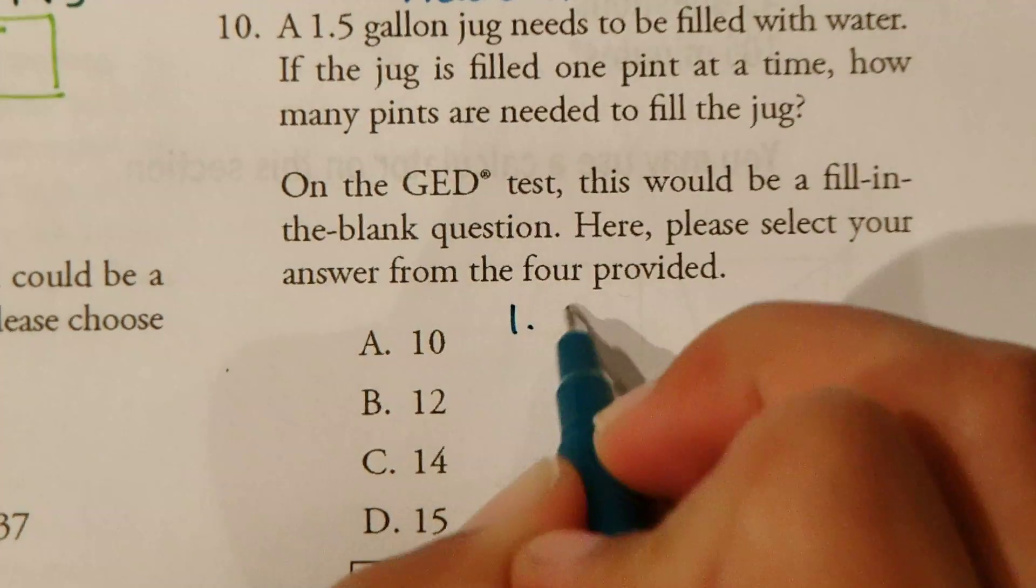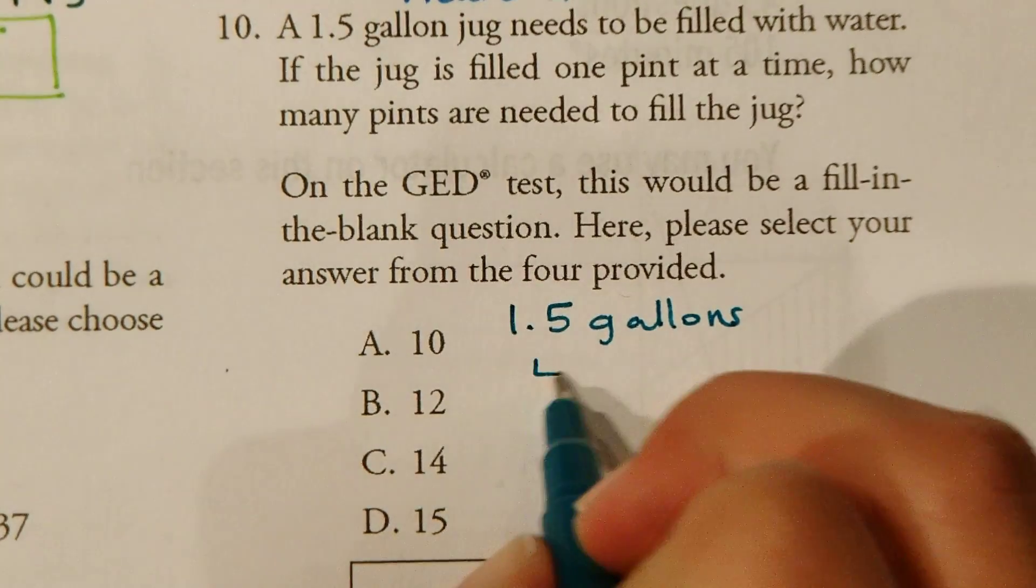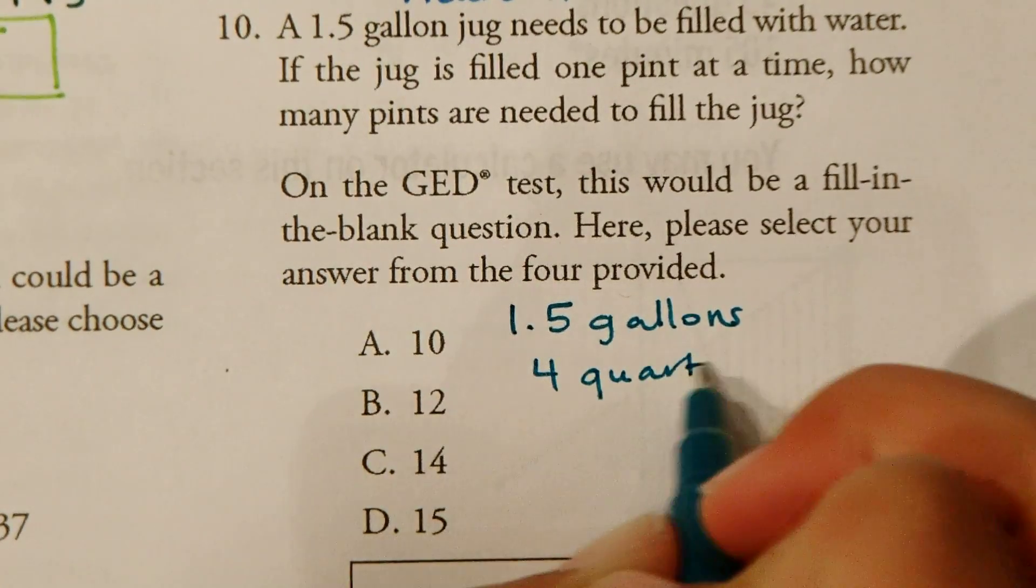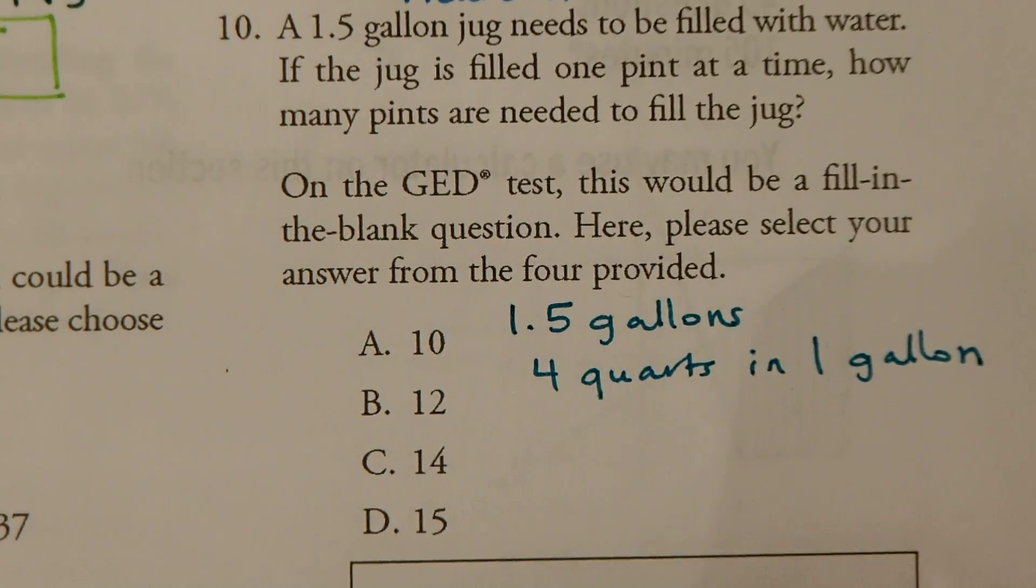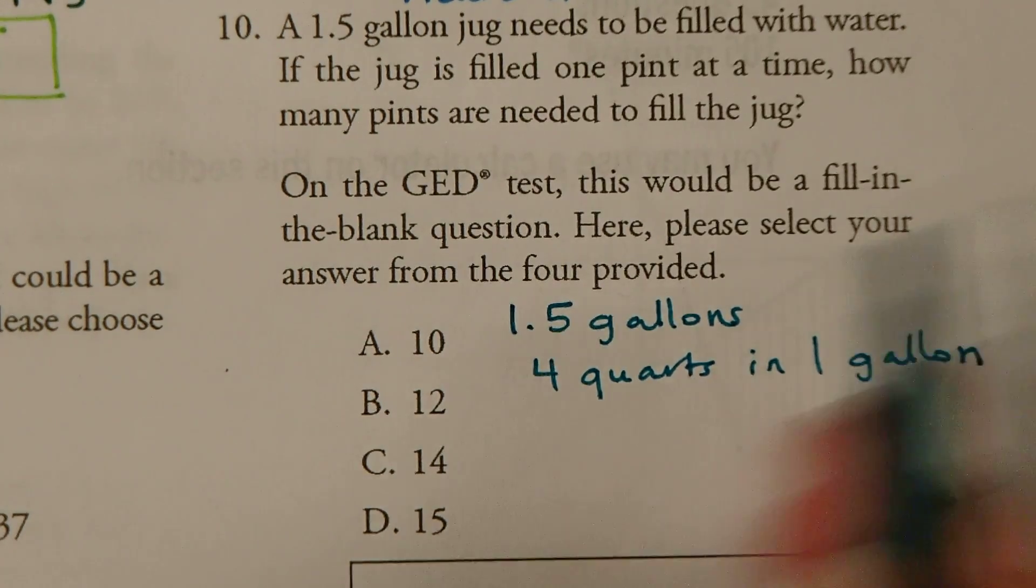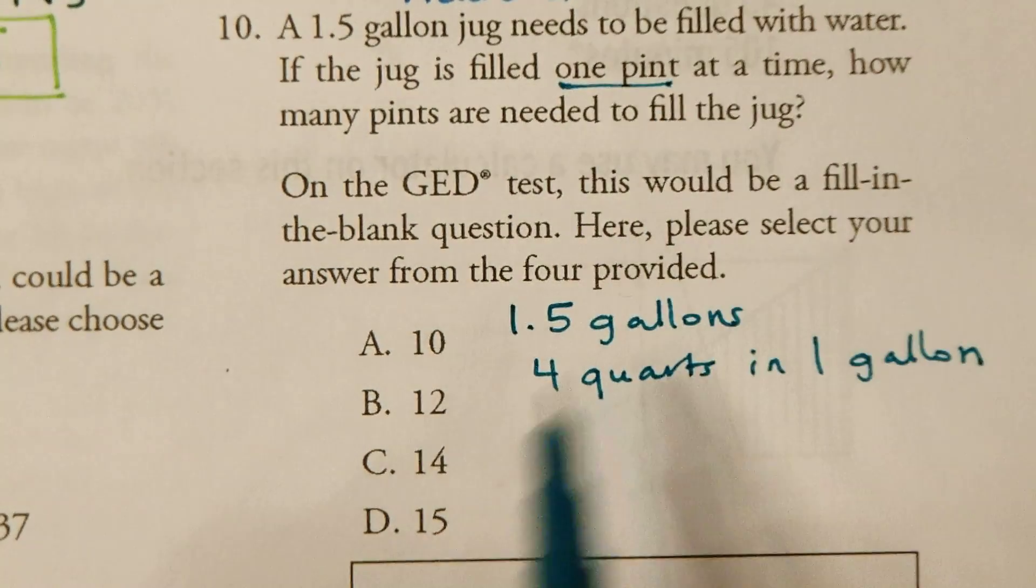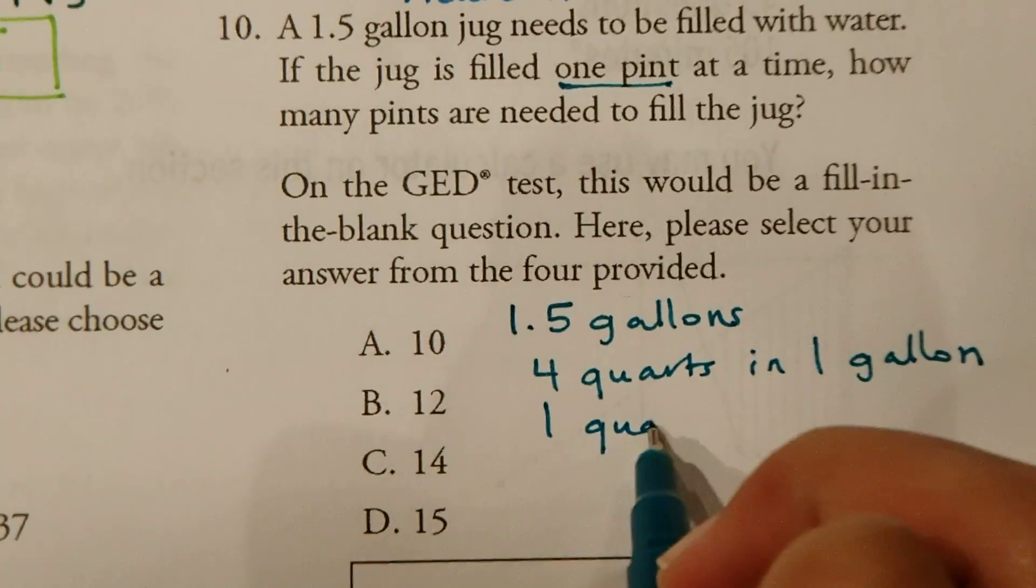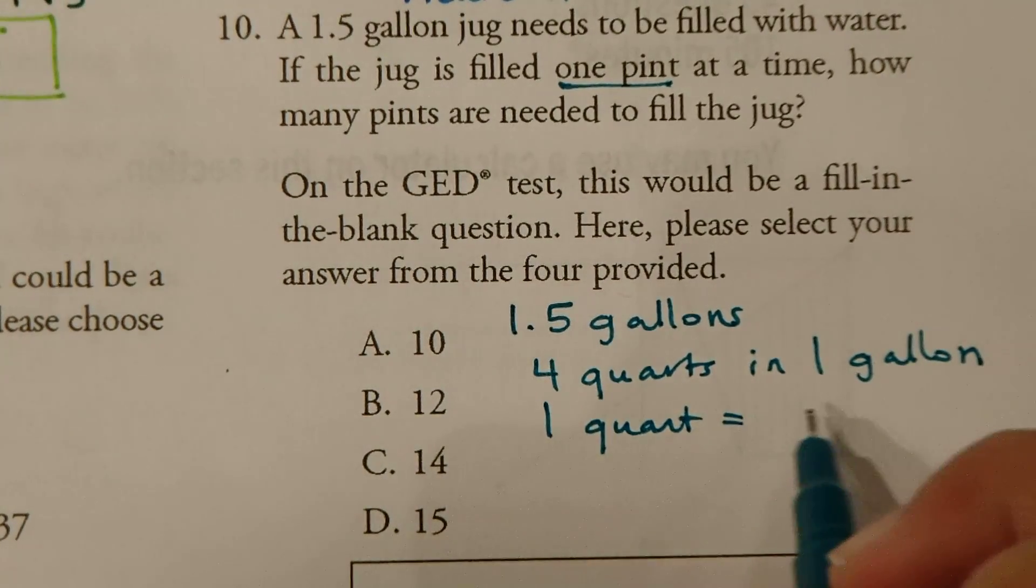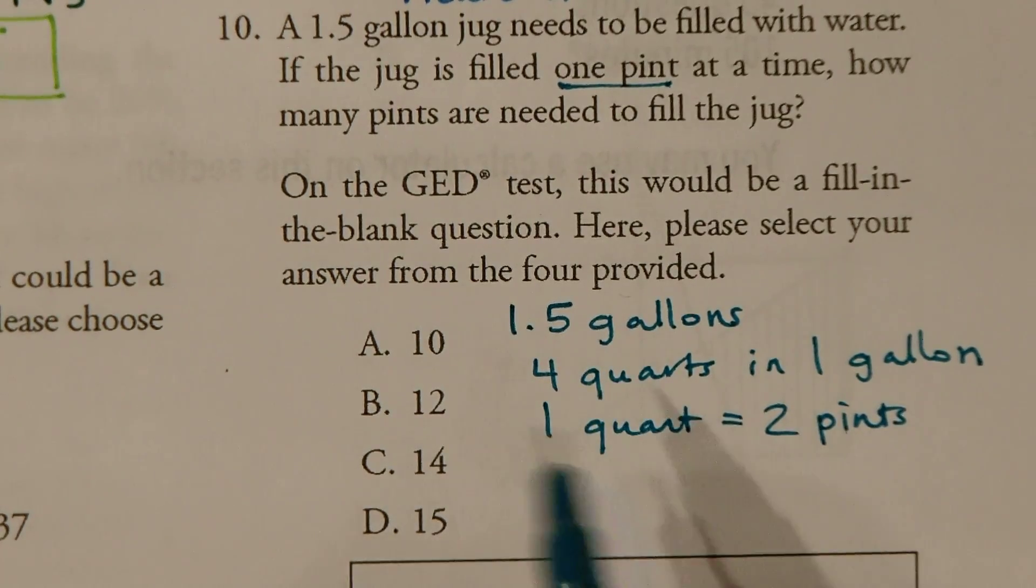First, we know we have 1.5 gallons. We know there's four quarts in one gallon. And we know one pint at a time. We know that one quart is equal to two pints. So here's our little conversion chart.